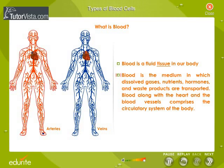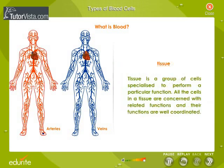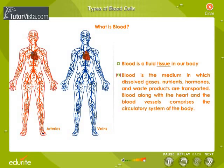As a tissue, blood is formed of cells and other components. Let us discuss some more details about the cellular components of blood.